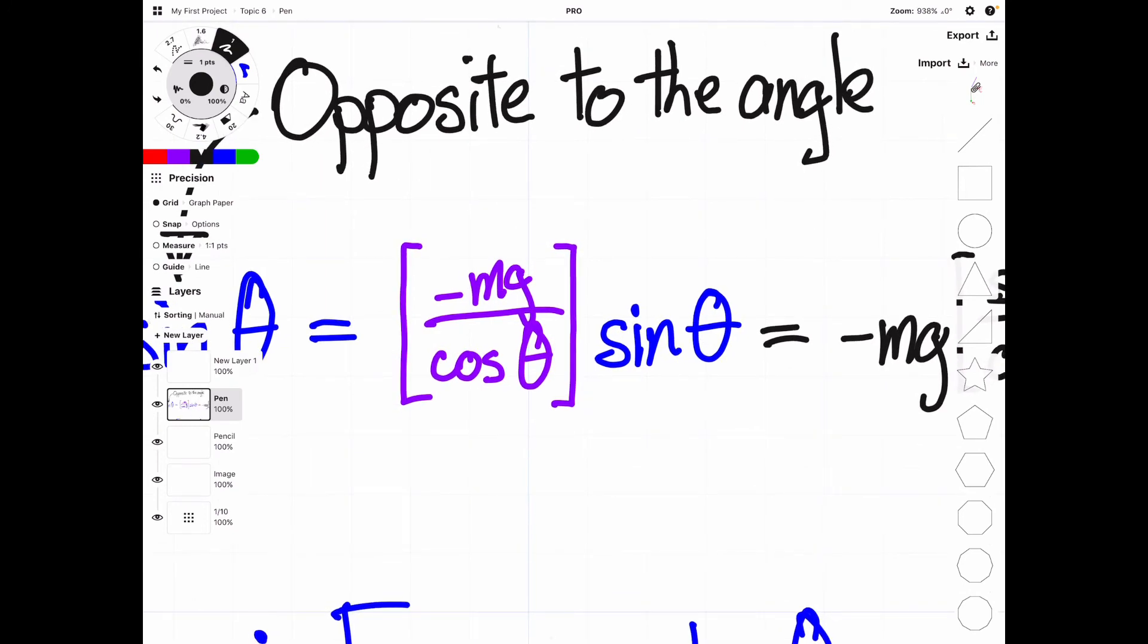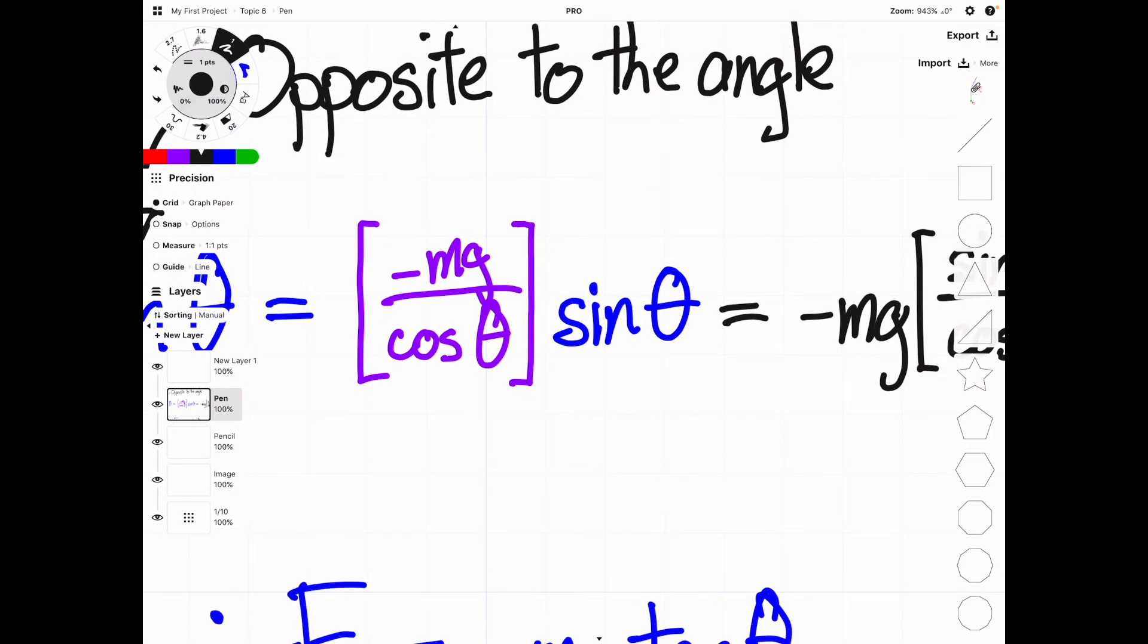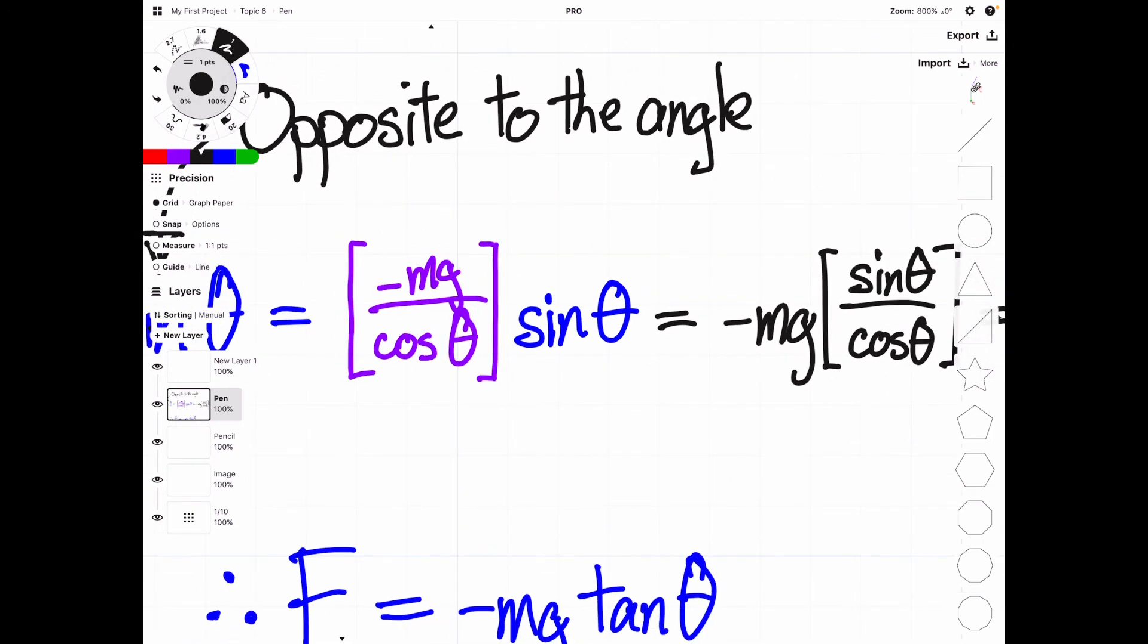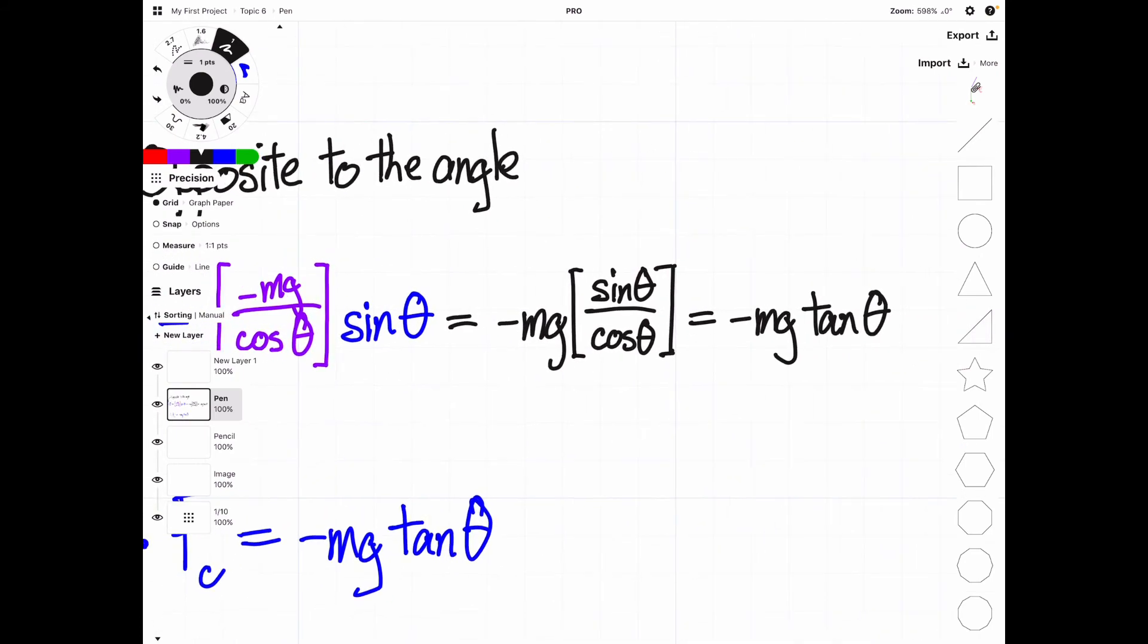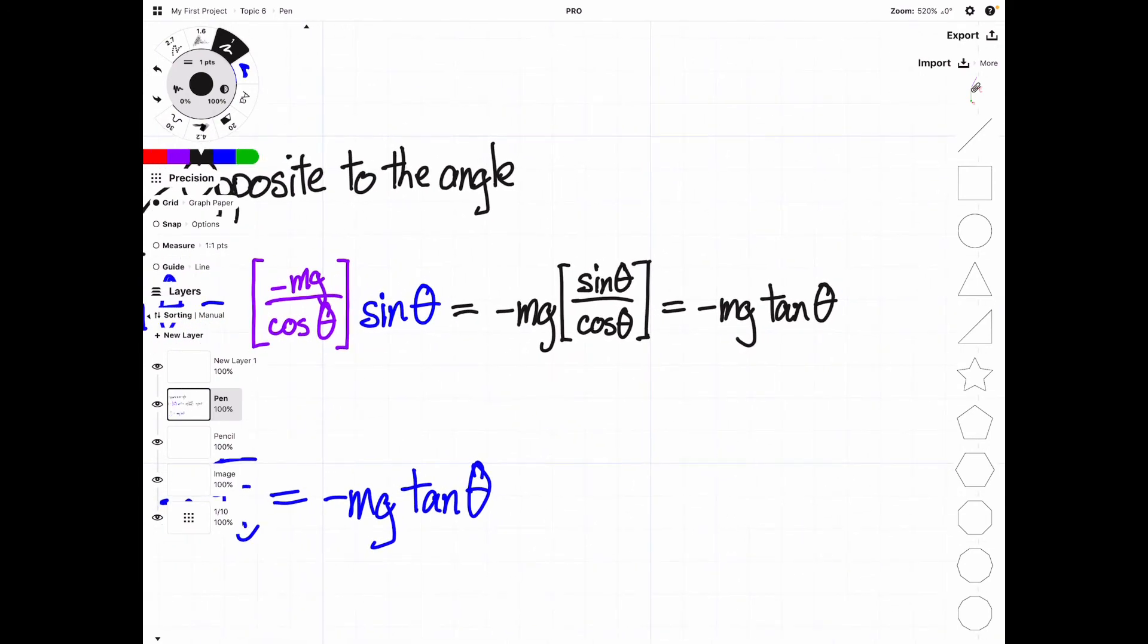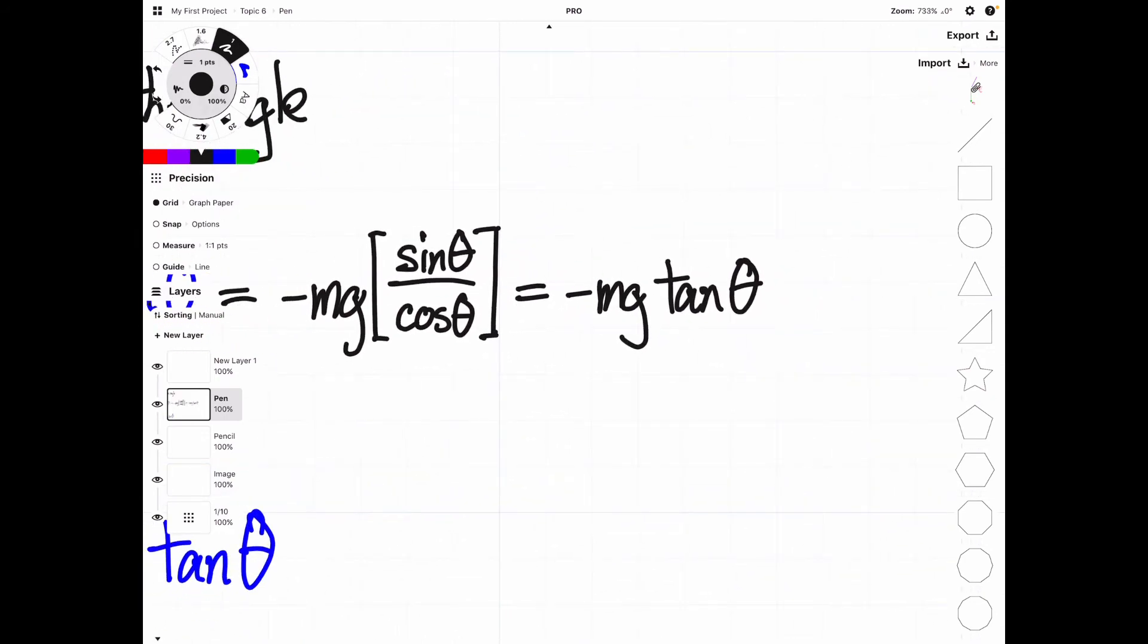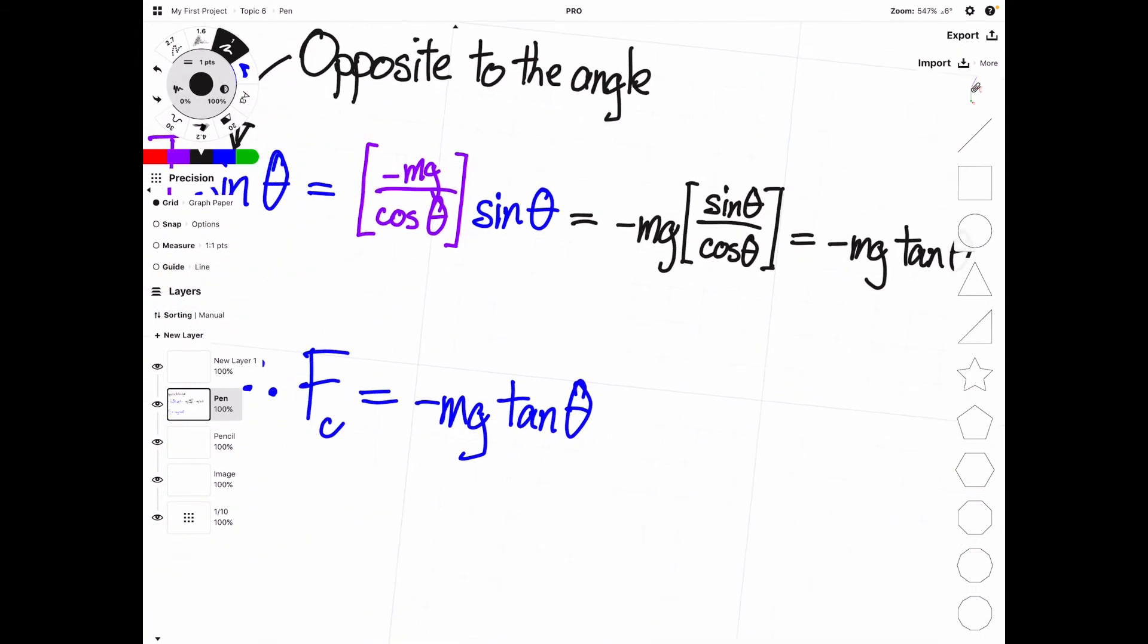where we have the quantity, negative mass times gravitational acceleration, divided by cosine of theta times sine of theta. And then we can slightly rearrange this, so that sine of theta and cosine of theta are on top of each other, and you will note that that is the definition of the tangent function. So that will then give us negative mg tangent of theta.